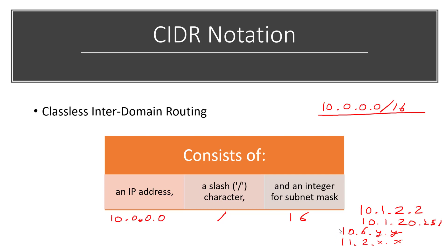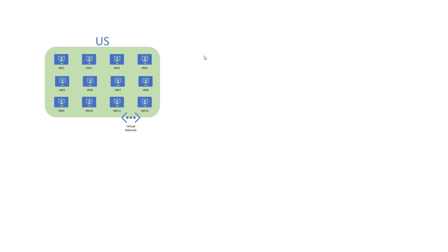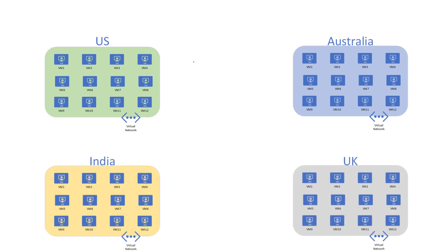We've now seen how an IP address works, what its components are, how the subnet mask differentiates the network component from the host component, and how CIDR notation represents all these concepts. Let's bring it all together with a simple example. Say we have multiple offices across the globe — one in the US, one in Australia, one in India, and one in the UK. When designing these networks, we leverage class A with 10.0.0.0 and a subnet mask of /16, meaning the first two octets identify the network and the last two identify the host.